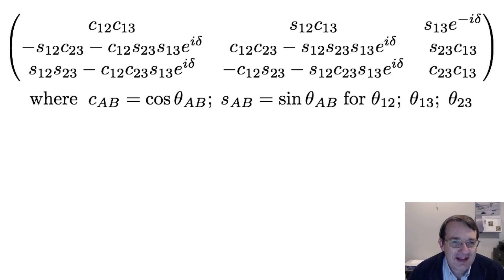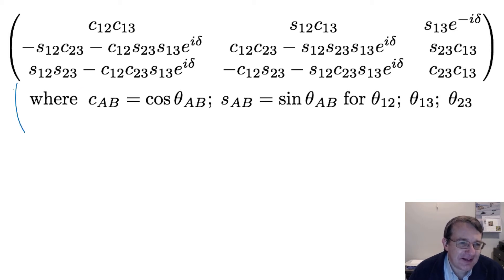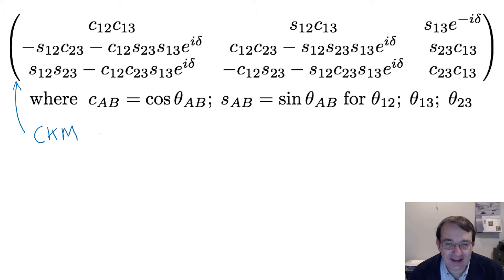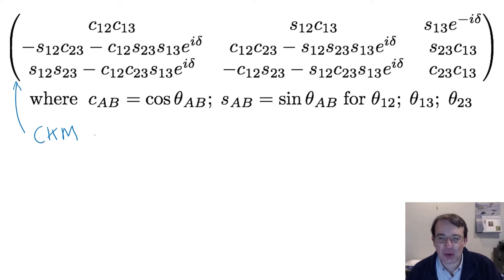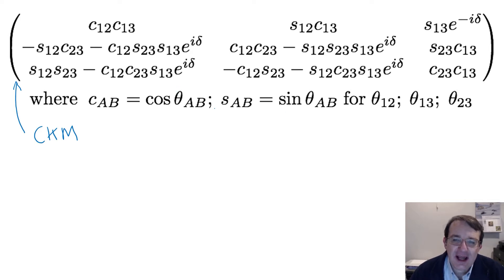So given that the standard model can potentially explain CP violation, let's see how we can put that into the standard model. This matrix is just the CKM matrix, which describes the mixing between the weak and strong eigenstates for quarks — it explains how the weak eigenstates are not the same as the strong flavor eigenstates. It can be expressed as three angles (three free parameters) and one complex phase.